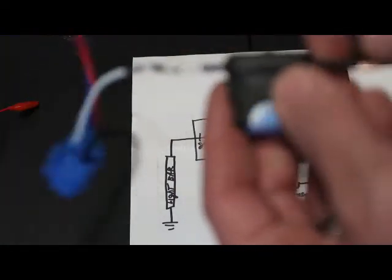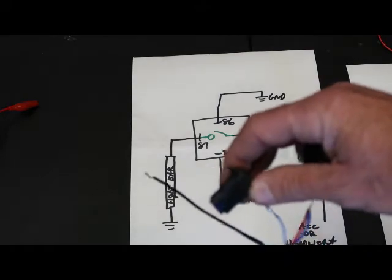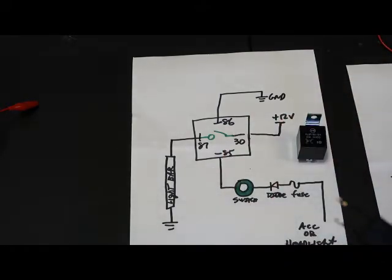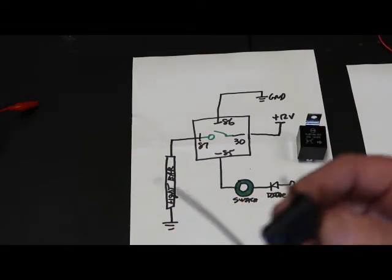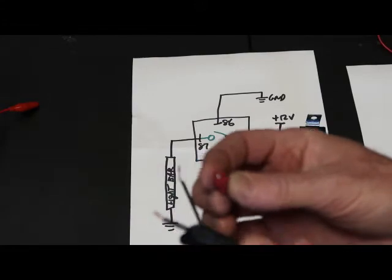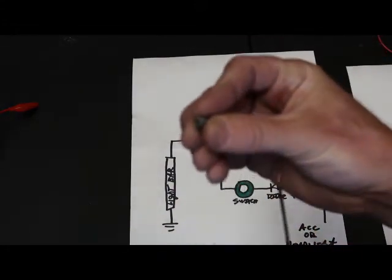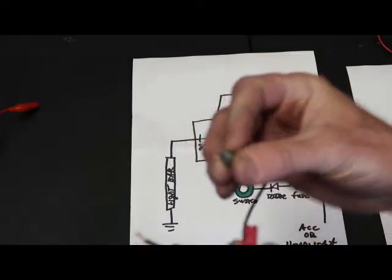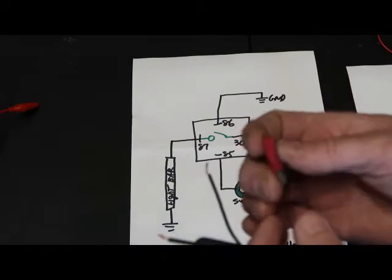And so we'll take this and we'll hook it into the ACC. We'll hook it into ACC on the car. And how we'll do that is we'll use this thing called a posi-tap. These things are very cool little connectors. What you do is you'll put this under the wire, put the wire between here, and you'll just screw this posi-tap on and it will tap into the car wire.